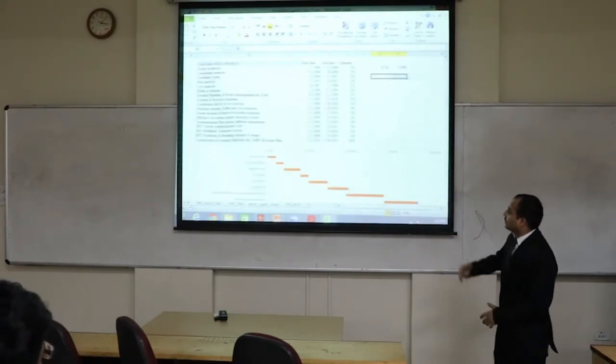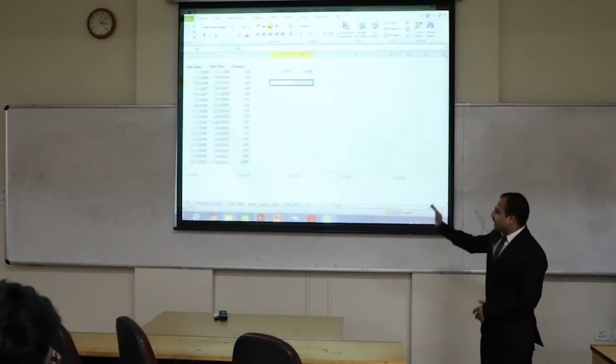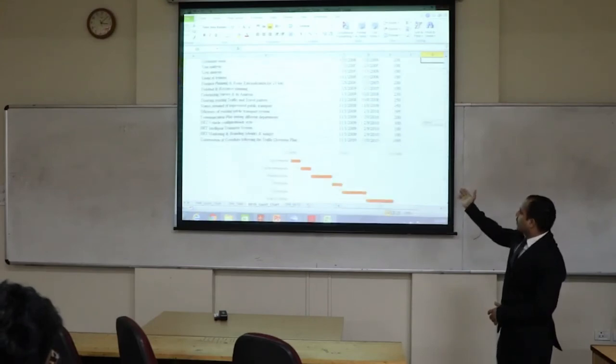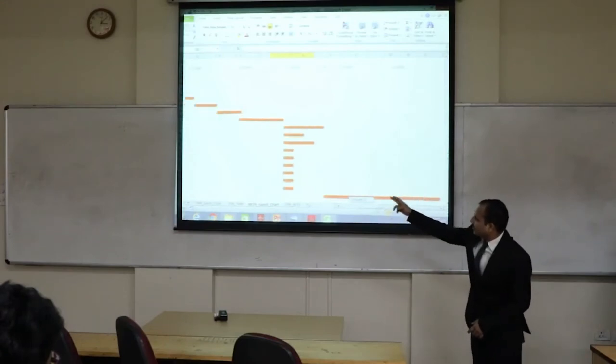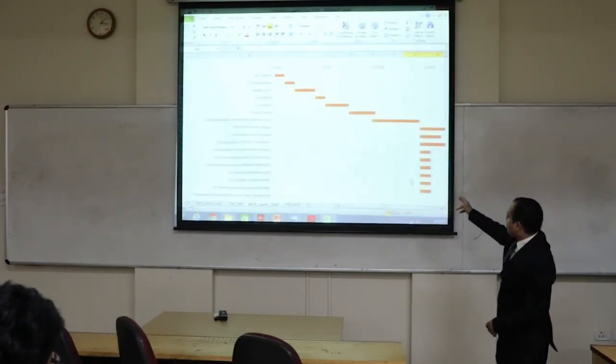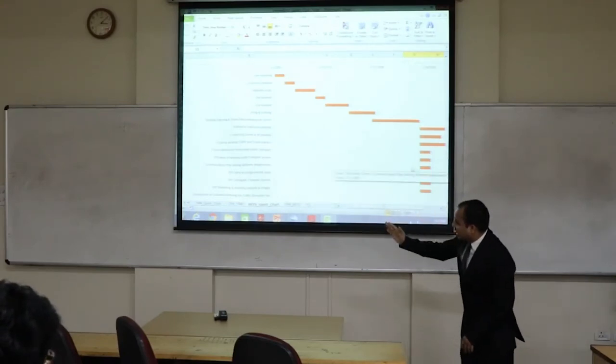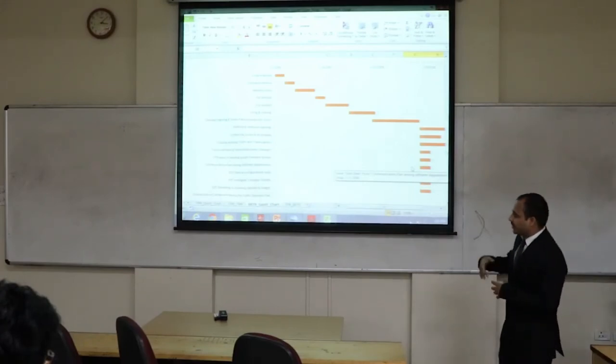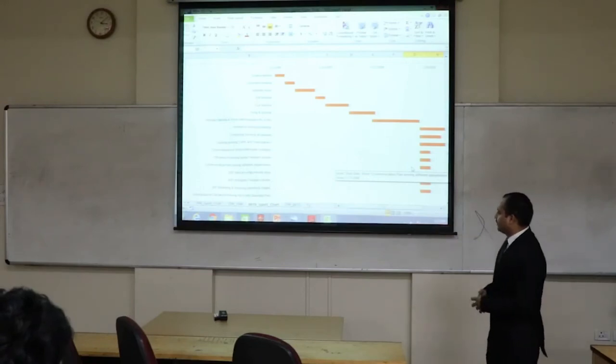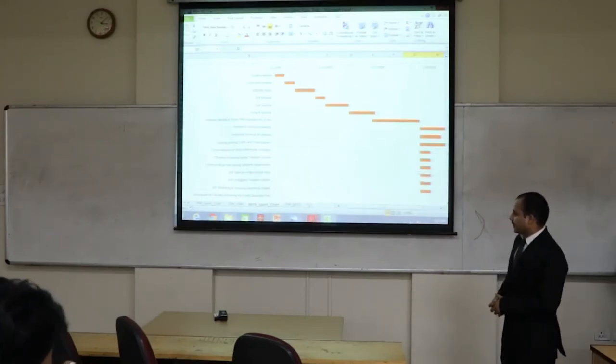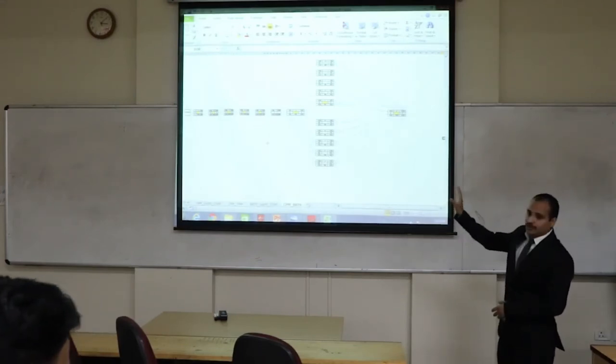These were taken out from the work breakdown structure with start date and end date and then it was converted to the Gantt chart. The same was used in making of critical path method. As you can see, these are the parallel activities which are going on during our planning phase. For example, BRT vehicle configuration style intelligent system, these all were the systems which they were planning to install in it. The critical path method has been shown with the yellow dots.